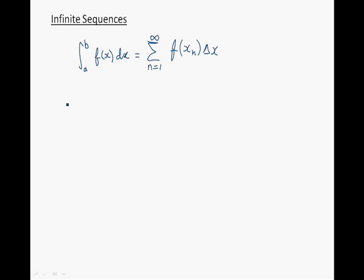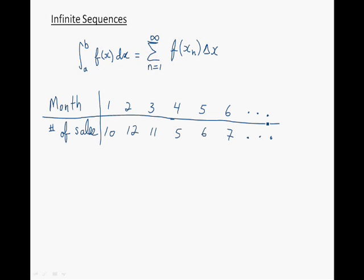Now let me introduce infinite sequences with an example. A company keeps a record of the number of sales it makes every month and produces the following table. And if the company continues to sell its products indefinitely, then the number of sales forms an infinite sequence of numbers.